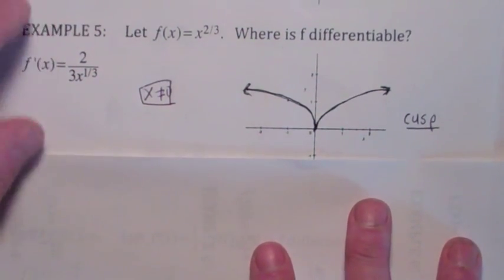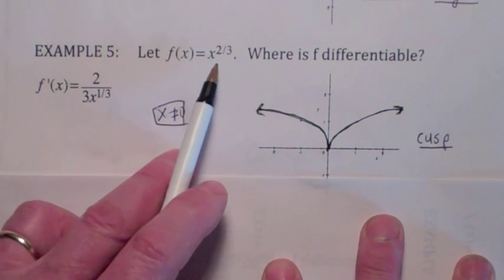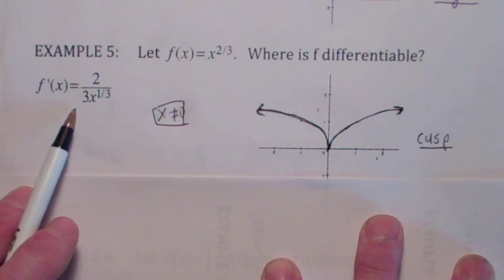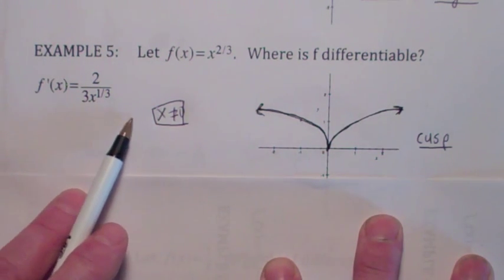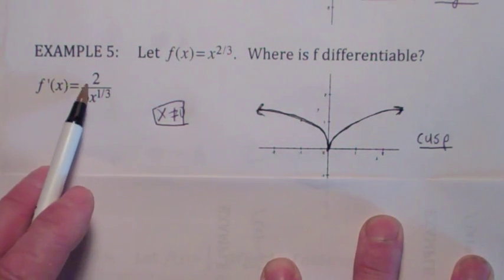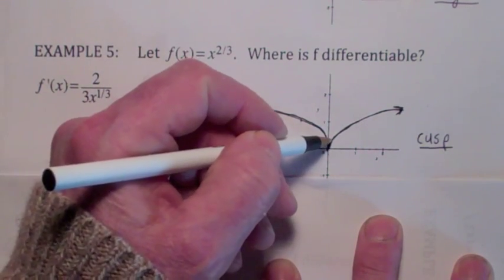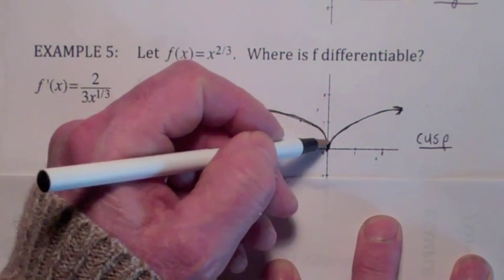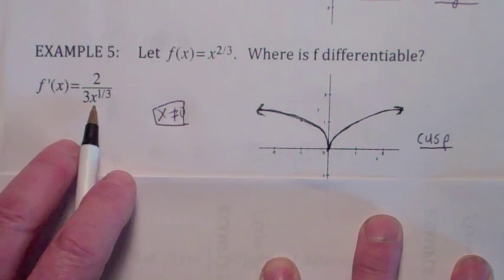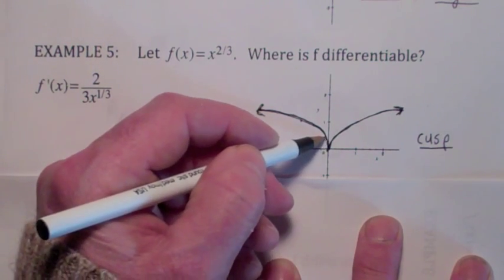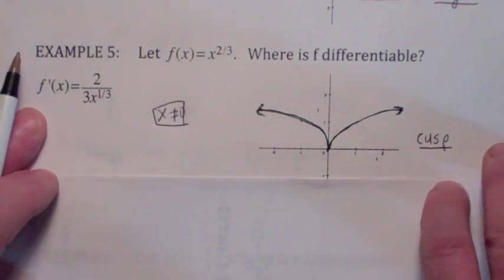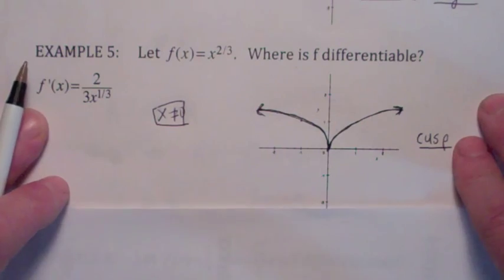Here's another one. This looks a lot like a corner — it's called a cusp. Look at the function f(x) = x to the 2/3. The derivative turns out to be 2 over 3x to the 1/3. As x is a positive number getting close to 0, this is getting close to positive infinity — the slope of the tangent line from the right approaches positive infinity. If x is a negative number, the derivative is very negative, approaching negative infinity as x approaches 0 from the left. So a cusp is like a really, really bad corner.